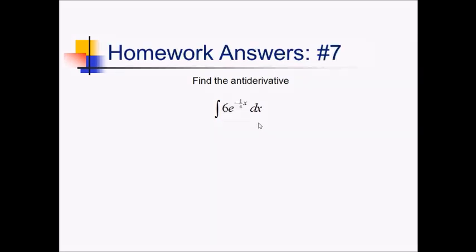For this problem, we want the antiderivative of this exponential function. The antiderivative of e to the x is e to the x. So, we can write this as 6e to the negative one-fourth x, but then we have to multiply by the reciprocal of that inner linear tail. So, we're really multiplying by negative 4 — the reciprocal of negative one-fourth — which is going to end up giving us negative 24 e to the negative one-fourth x, plus c.